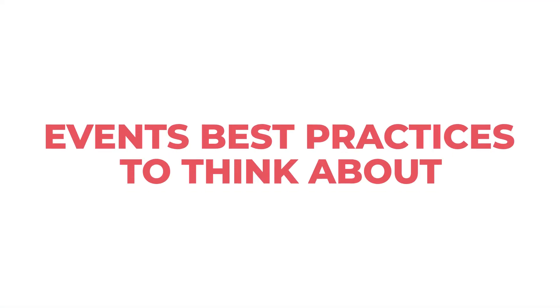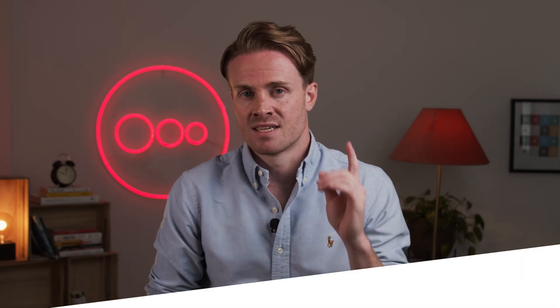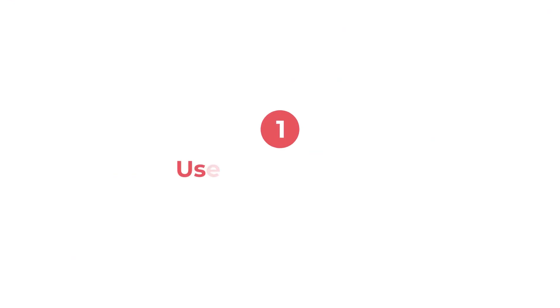Now let's talk through some best practices so you can work optimally with events and keep your data clean. Number one: use snake casing, which means replacing spaces with underscores and writing the first letter of each word in lowercase. You should do this because auto and enhanced events are already using it, so it's cleanest to continue.